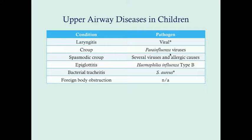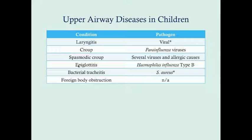We'll also talk about croup, which is typically caused by the parainfluenza viruses. There's a subset called spasmodic croup, which may be caused by viruses but also has some allergic causes. We'll talk about epiglottitis, which — save perhaps for foreign body obstruction — presents as a medical emergency, typically caused by Haemophilus influenzae type b. Because we're now vaccinating kids against that, epiglottitis is becoming much more rare. We'll also cover bacterial tracheitis and foreign body obstruction.